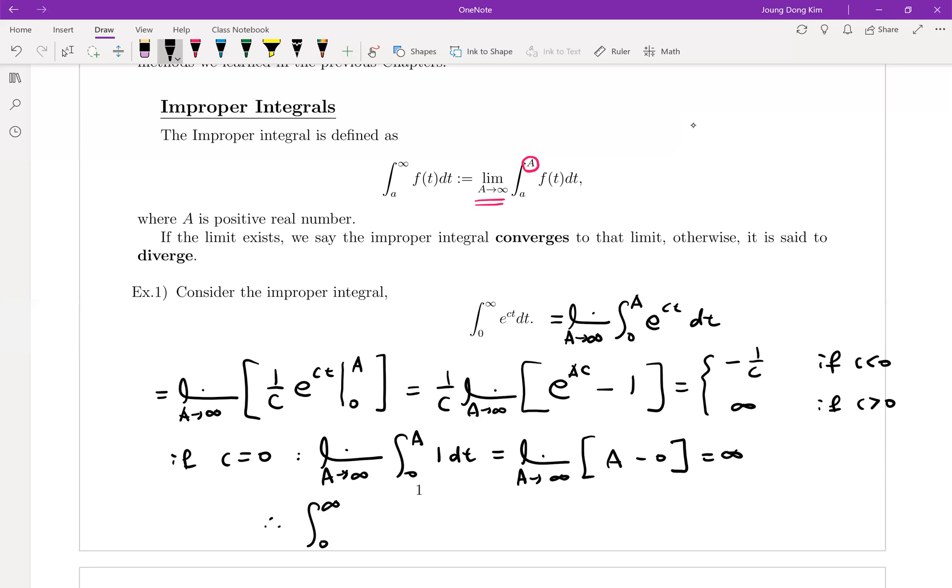So I can conclude this way. Integral zero to infinite e to the ct converges when c is less than zero, and diverges when c is greater than or equal to zero. Does it make sense?